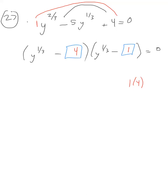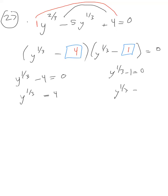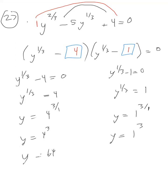Setting each factor equal to zero: y^(1/3) minus 4 equals 0 gives y^(1/3) equals 4, and y^(1/3) minus 1 equals 0 gives y^(1/3) equals 1. To remove the 1/3 power, raise both sides to the power of 3: y equals 4³ equals 64, and y equals 1³ equals 1. The answers are y equals 64 and y equals 1.